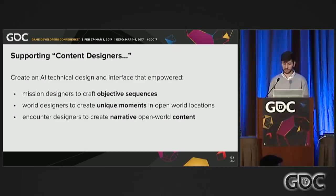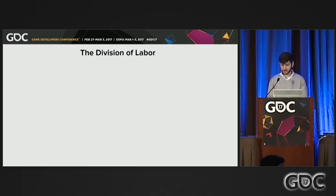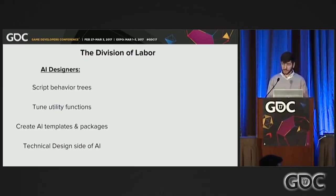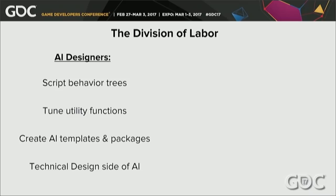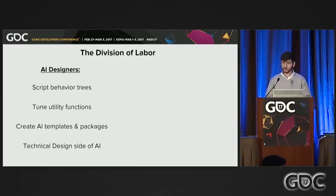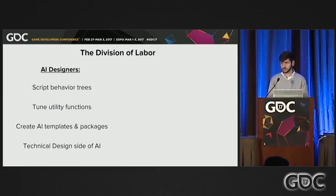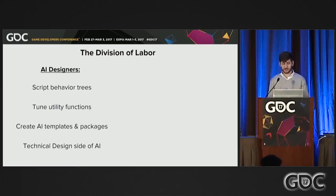To understand some of the solutions I'm about to talk through, it helps to understand the division of labor at Avalanche Studios New York. The AI designers — like me — do all the scripting of the actual behavior trees themselves, working with AI programmers who help build lower-level building blocks. We tune all the utility functions, create a variety of AI templates and packages for other designers to use. Whereas content designers — level designers, mission designers, world designers — are the ones actually placing characters in the world and filling out the exposed arguments and parameters on any of these character spawners.